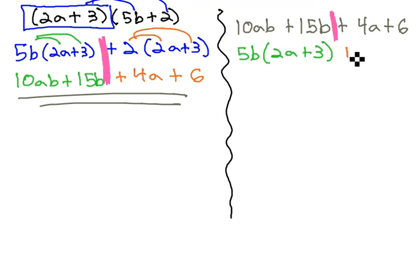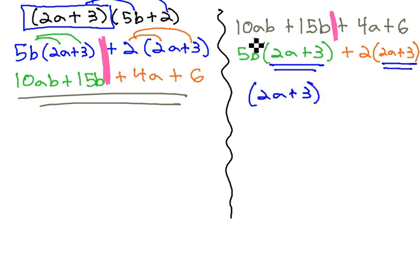And on the right side, we see there's a common factor of positive 2. And when we factor the 2 out, we see we're left with 2a plus 3. Notice when we've done this in groups, we end up with a matching binomial common factor. This is our goal as we factor with grouping. That 2a plus 3 is in common, and the remaining factor is 5b plus 2.